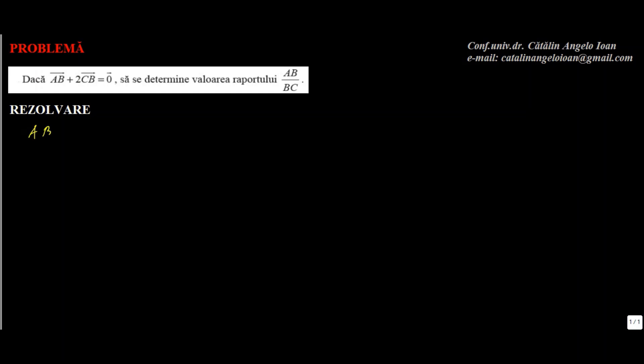Dacă AB plus de două ori vectorul CB egal cu vectorul zero, să se determine valoarea acestui raport. Trecem 2CB în partea cealaltă și obținem AB egal cu minus 2CB, care este opusul unui vector, adică egal cu de două ori BC. Trecând la modul, obținem AB egal cu de două ori BC. Prin urmare, raportul AB pe BC egal cu 2.